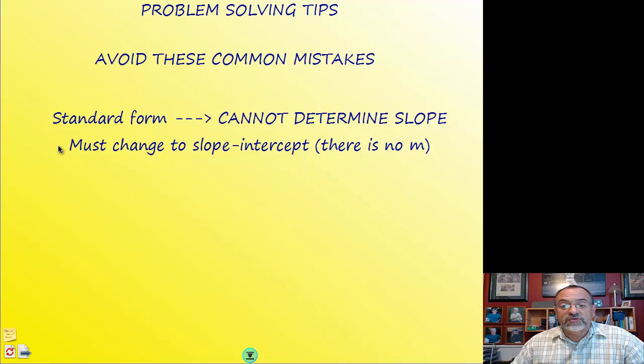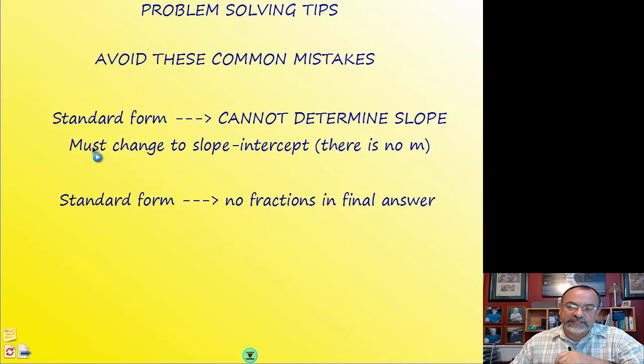and once it's in that form, then the value next to the x is the slope. So don't make the mistake of thinking anything next to the x is the slope, because it's not true. It's only if it's in slope-intercept form is that the case.